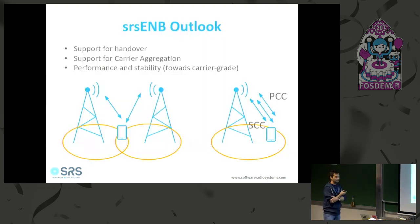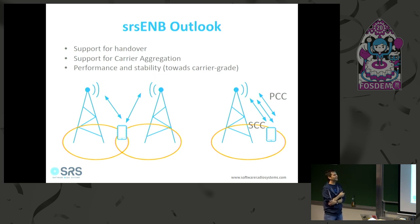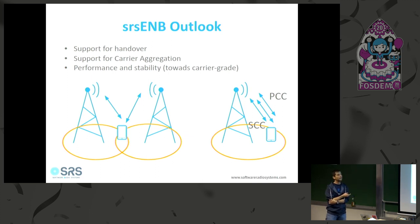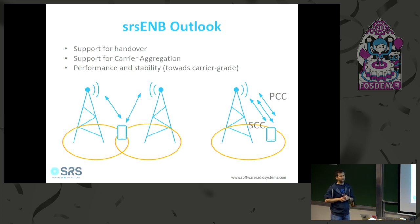The SRS eNodeB has been somewhat the stepchild of our development as we focus so much on the UE, but we will be focusing on it much more in upcoming months. We will add handover support — needed when a UE moves from one cell's range to another — and carrier aggregation, where a single UE can have a primary carrier plus multiple additional carriers for increased bandwidth.